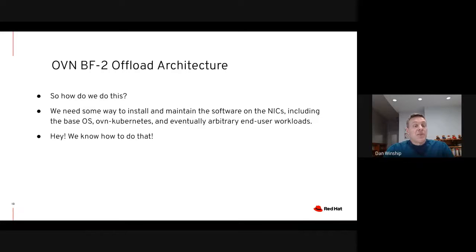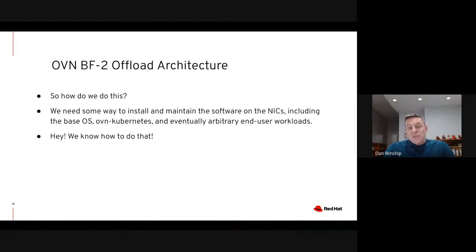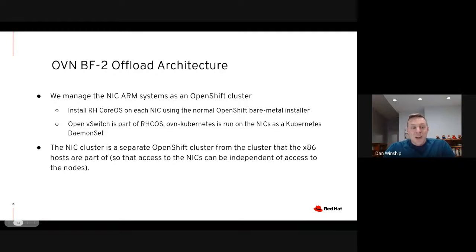So that's the what — now we have to figure out the how. We have this set of ARM systems which we need to install a bunch of software onto, including the base OS, OVS, OVN Kubernetes, and eventually arbitrary end-user workloads. We need to be able to monitor these systems, manage them, and coordinate which end-user workloads are running on which systems. And then eventually we'll need to upgrade the base OSes and all the other software — and this sounds like a hard problem, but as it happens, we know how to do that. We can just run OpenShift on the NICs. So we'll manage the ARM systems by creating an OpenShift cluster and using that to manage and monitor the software on all of the NICs.